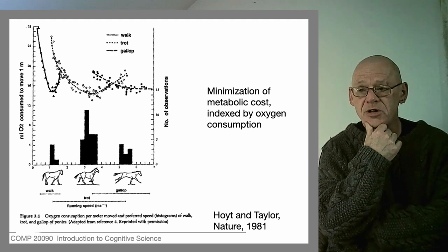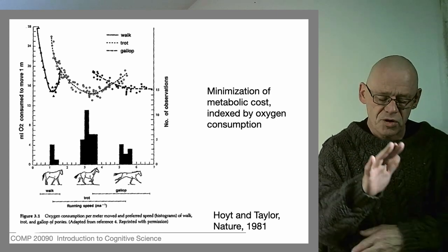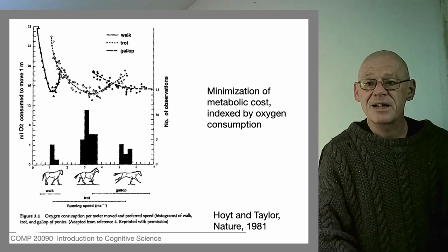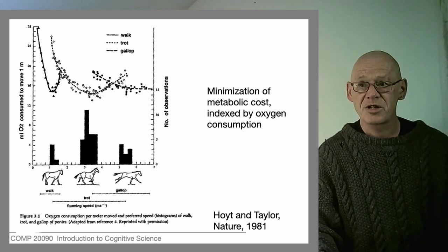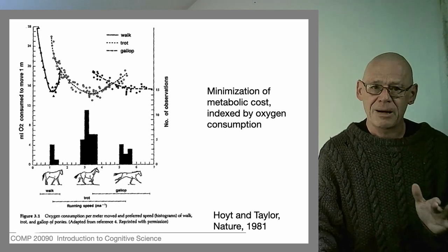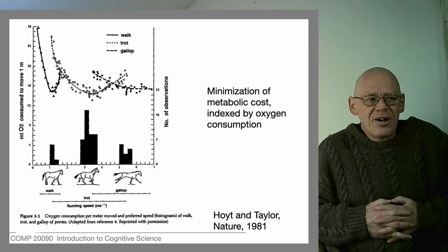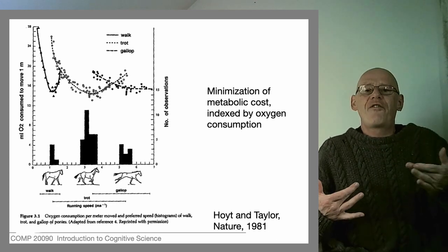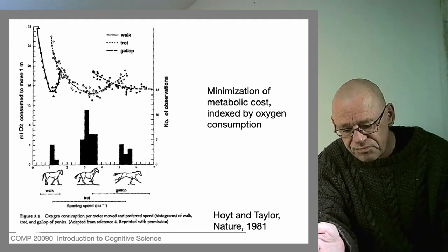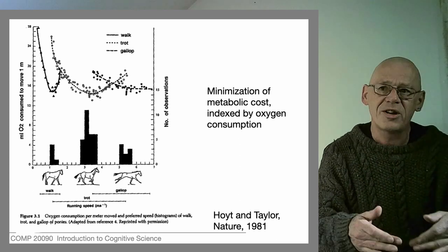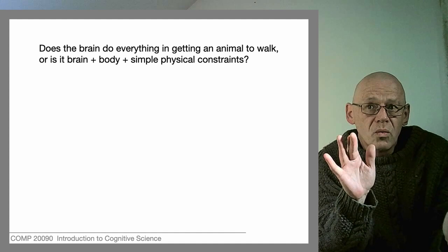A follow-up study by a different group used more or less the same methods but looked at a different variable: instead of oxygen consumption, they looked at hoof strain — the stress placed on the hoof when the foot hits the ground. What they found was more or less the same thing: there's a sweet spot where strain is minimized for walking, trotting, and galloping, and it lies at the same point as the minimum for oxygen consumption. This shows that evolution is a tinkerer, not a control engineer — evolution plays with all kinds of variables at once and we only get to see the finished product. These animals have evolved to move in an extremely efficient fashion across the board.